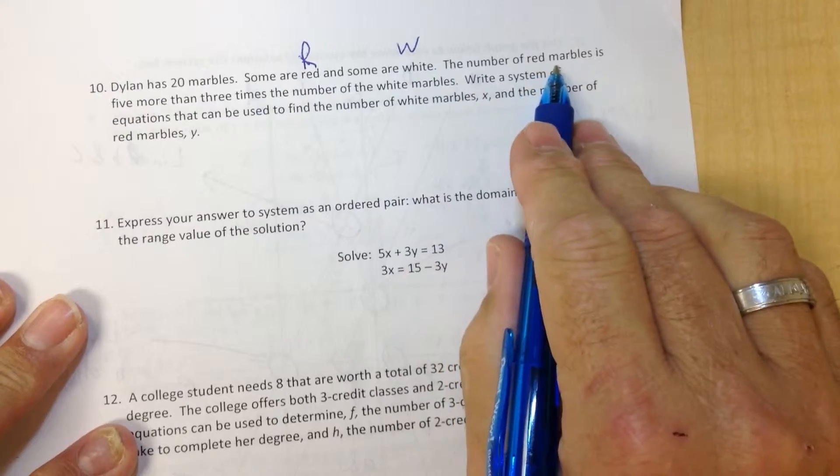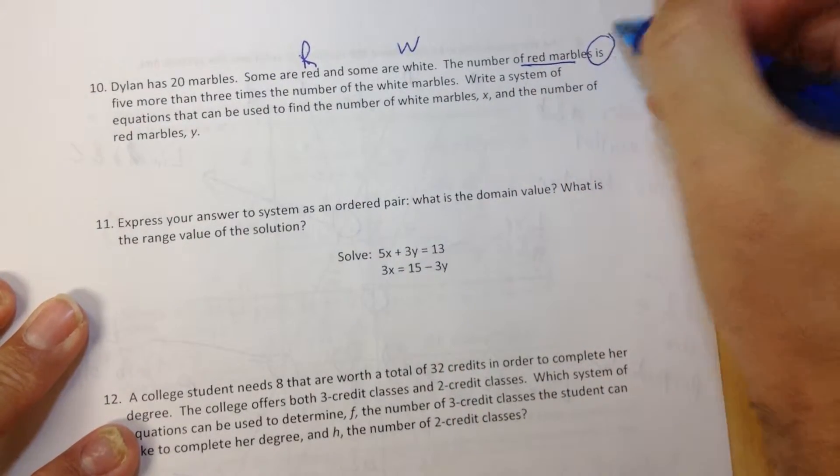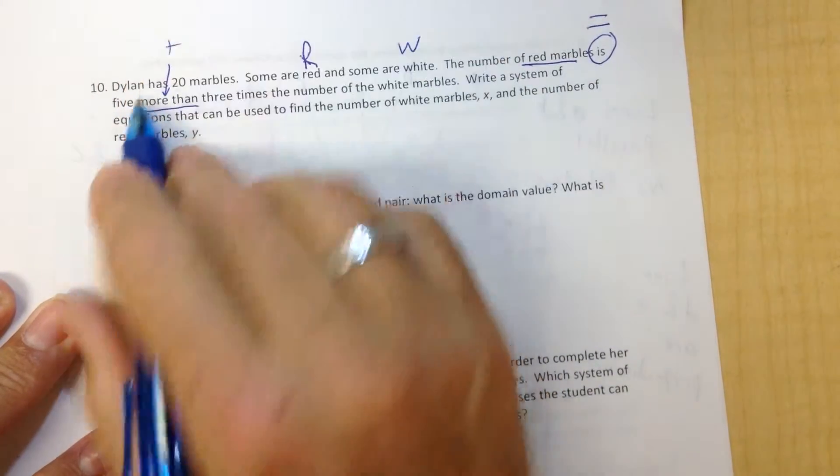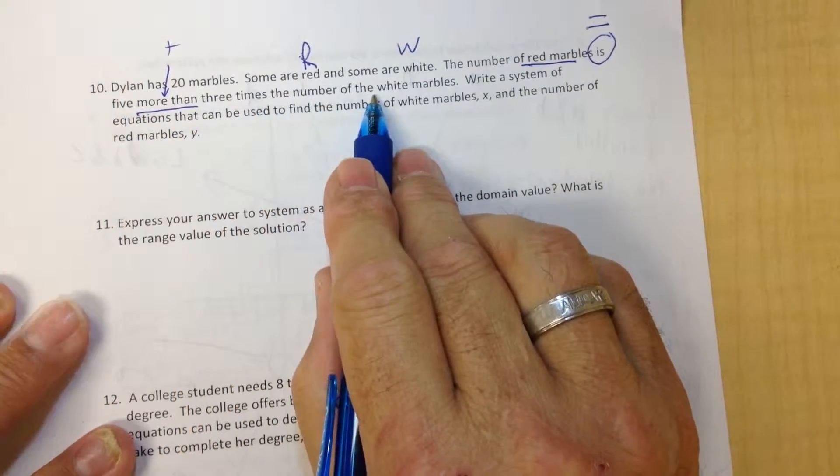The number of red marbles is going to equal... the 'more than' is going to be plus 5, plus 3 times the number of white marbles.